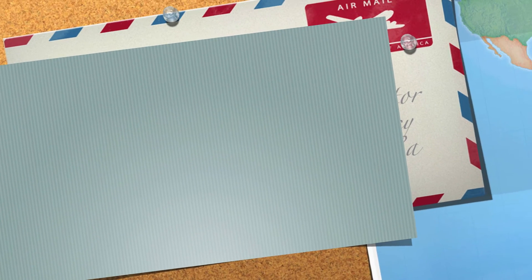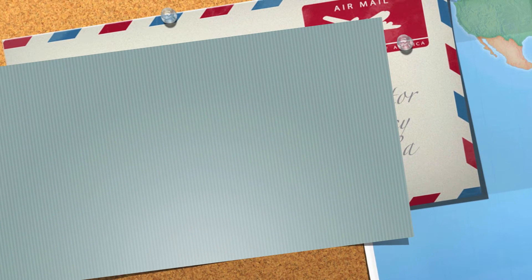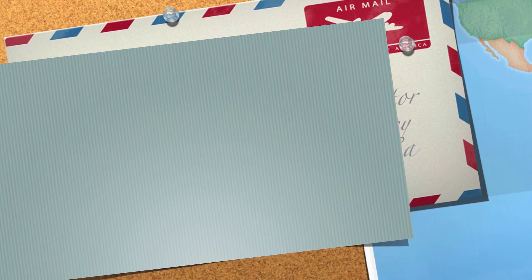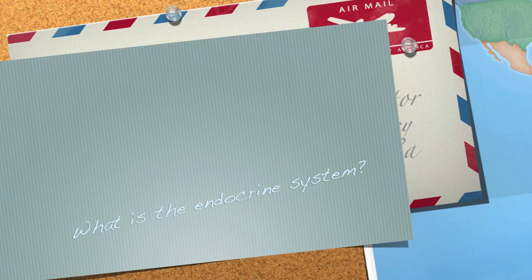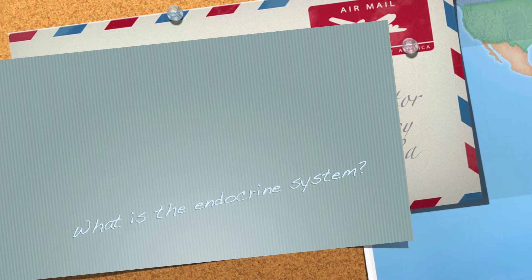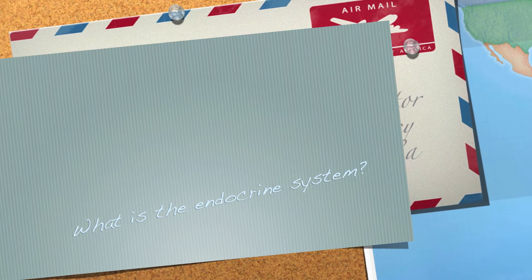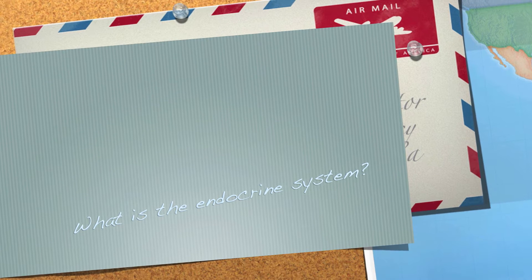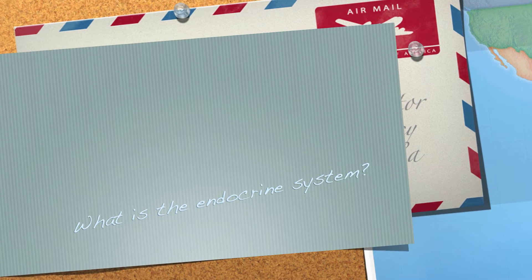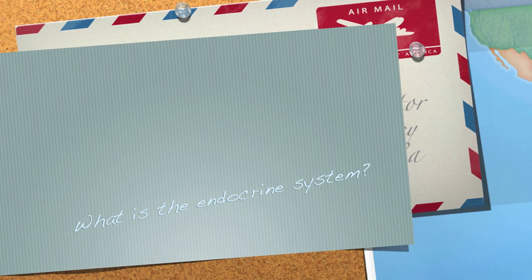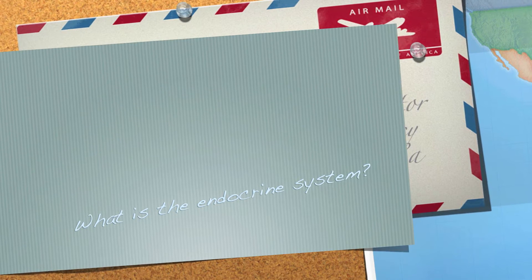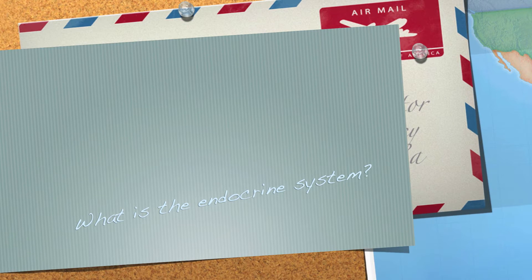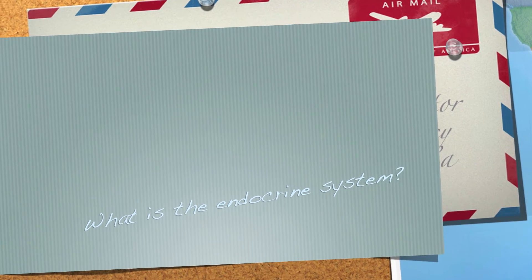To understand this system, it is important to first note what exactly is the endocrine system. Basically, it's a group of glands within the body that release hormones directly into the bloodstream. This is in contrast to an exocrine gland, which first releases its secretions into a duct.